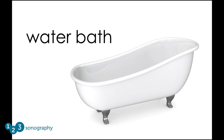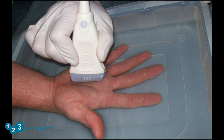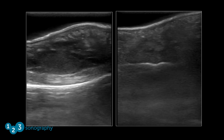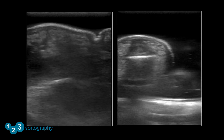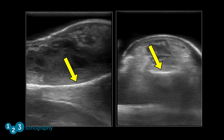Another strategy that is particularly useful for imaging the hands and the feet is a water bath. The hand or foot is submerged in water and the tip of the transducer is dipped into the water over the area of interest. The water acts as a perfect transmitter of ultrasound and provides great images. This is an image of the tip of a finger using a water bath. The anechoic area proximal to the soft tissue is the water, this is the skin surface, this is the soft tissue in the tip of the finger, and this is the distal phalanx.